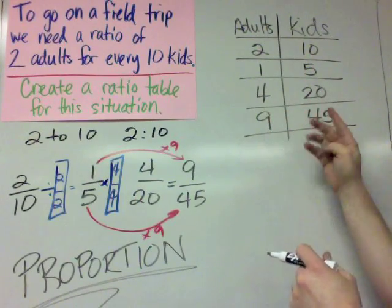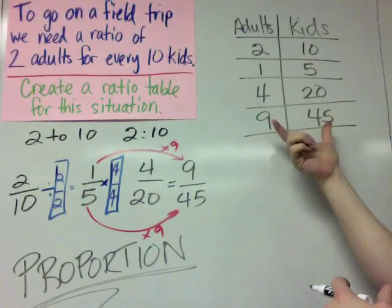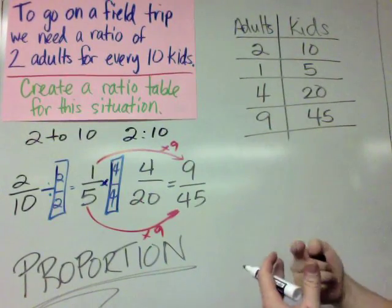It's a collection of equivalent ratios. So this table is proportional. It represents a proportion. It's a collection of equivalent ratios.